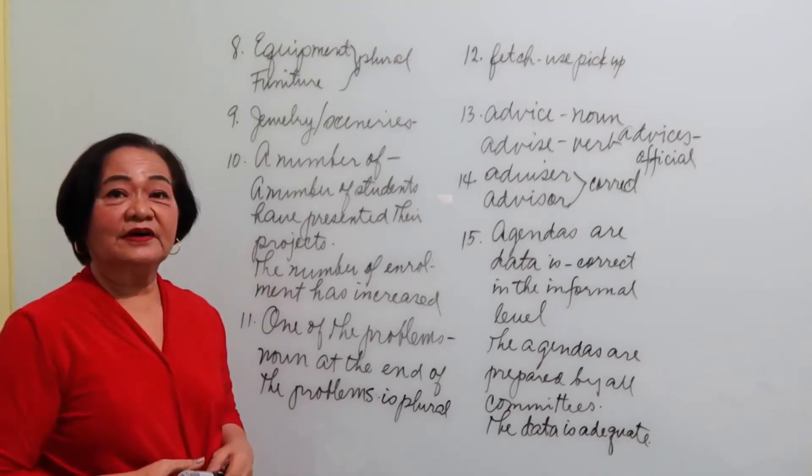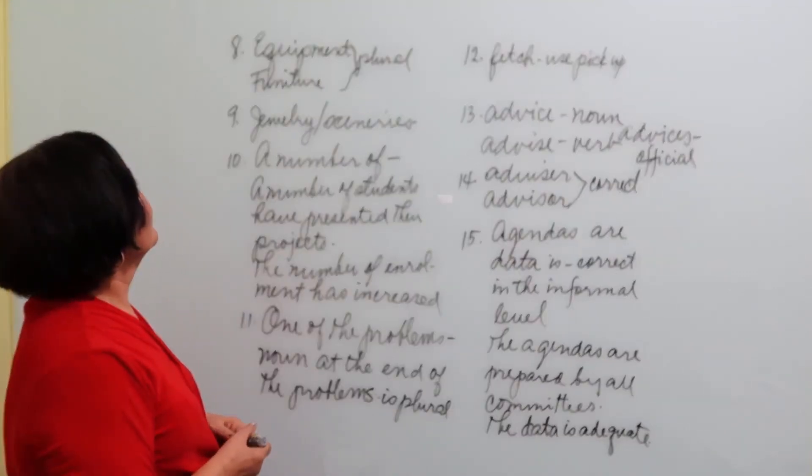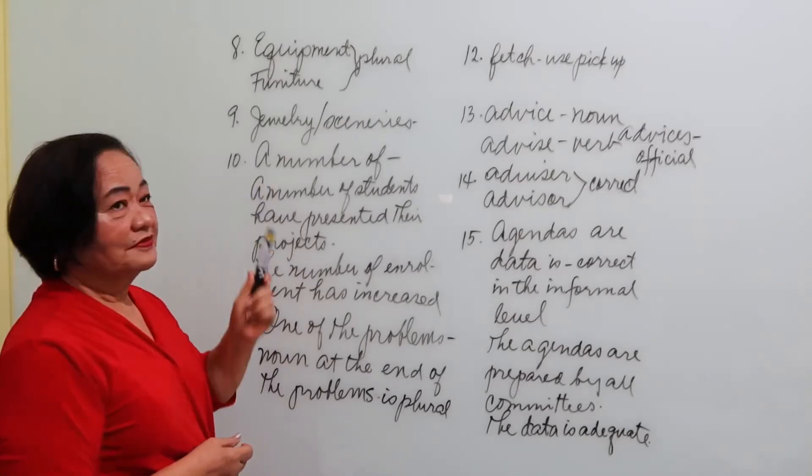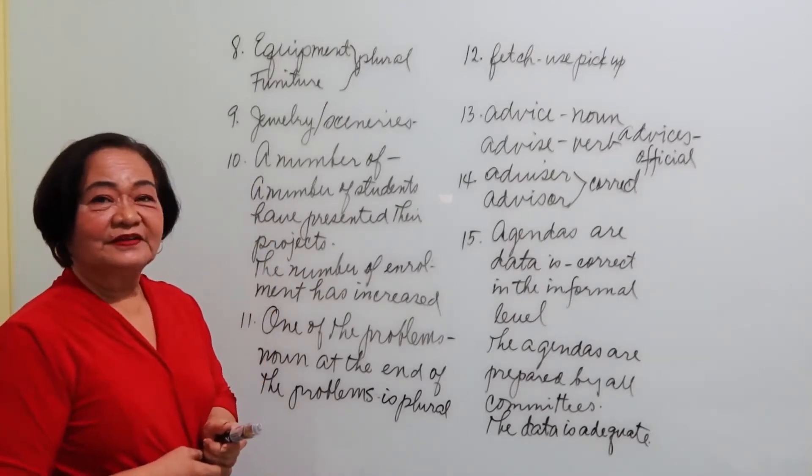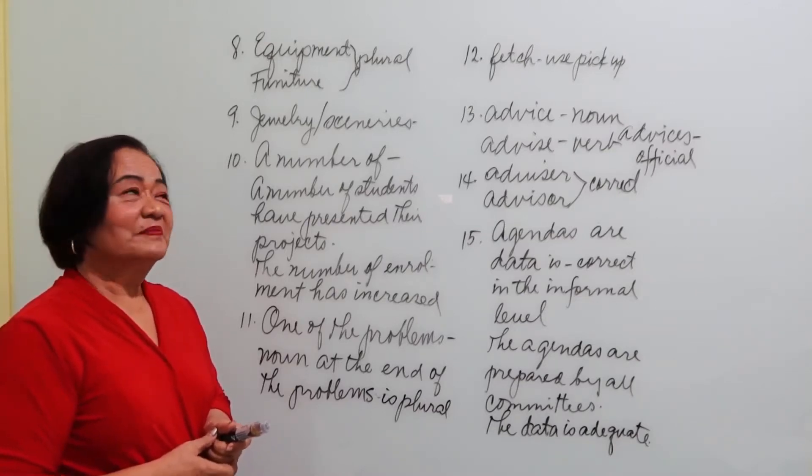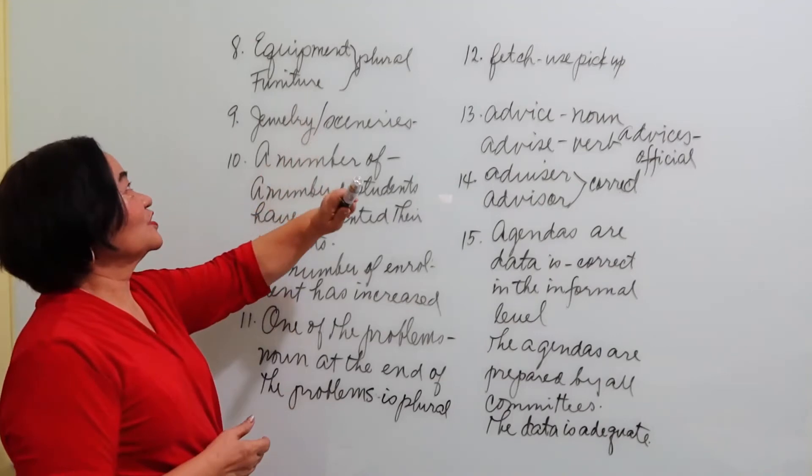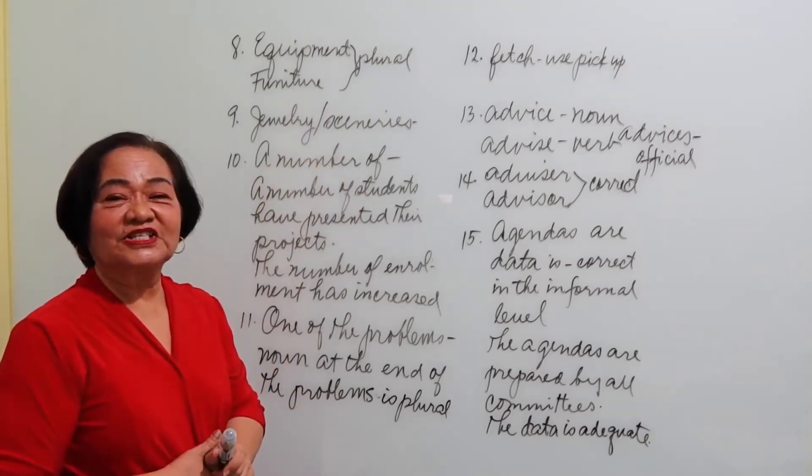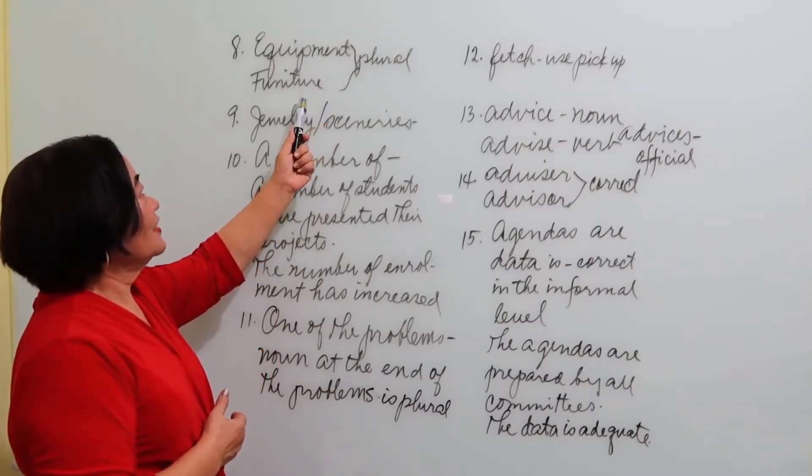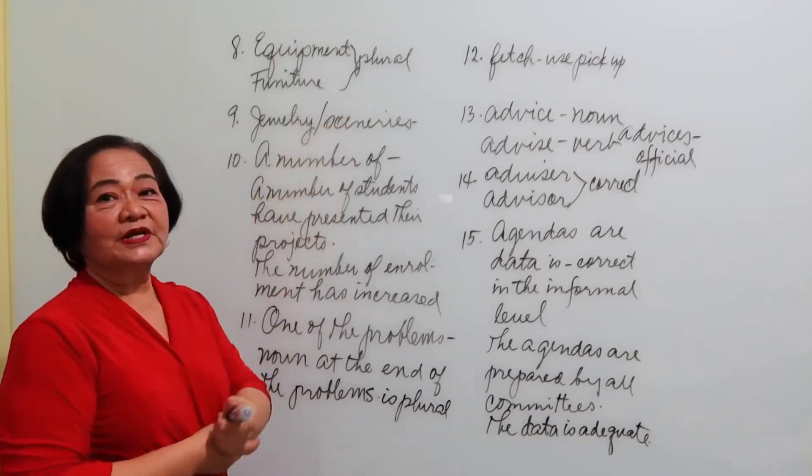Now, this is the second part of Diction. We have equipment, furniture. This should be taken as plural. But you don't say equipments, neither do you say furnitures. They remain equipment, furniture, with a plural verb.